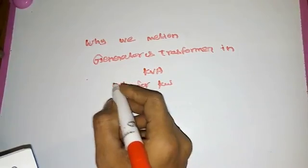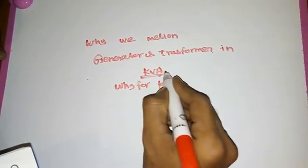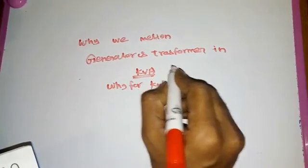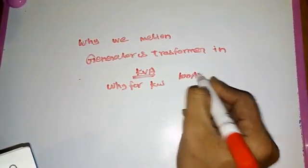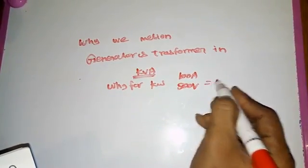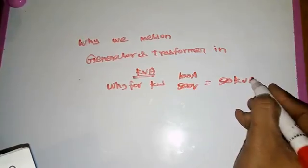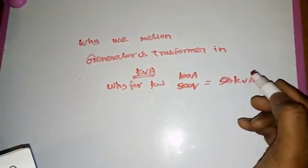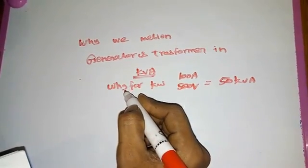Generally, we mention generator or transformer in KVA because — suppose we have a 100 ampere output generator with 500 rated voltage, so we mention it as a 50 KVA generator. This is the way we are mentioning generator or transformer ratings.